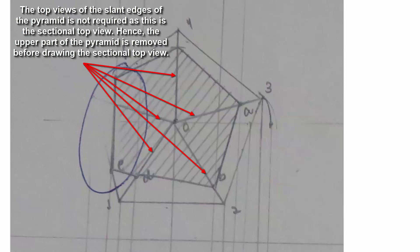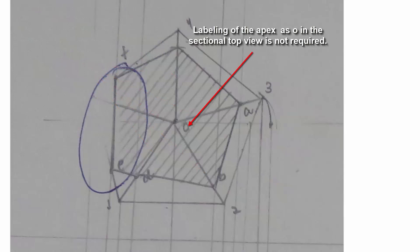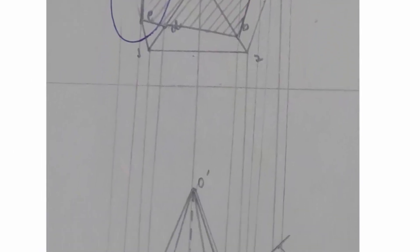The top views of the slant edges of the pyramid is not required as this is the sectional top view. Hence, the upper part of the pyramid is removed before drawing the sectional top view. Labeling of the apex as O in the sectional top view is not required because the upper part has already been removed.